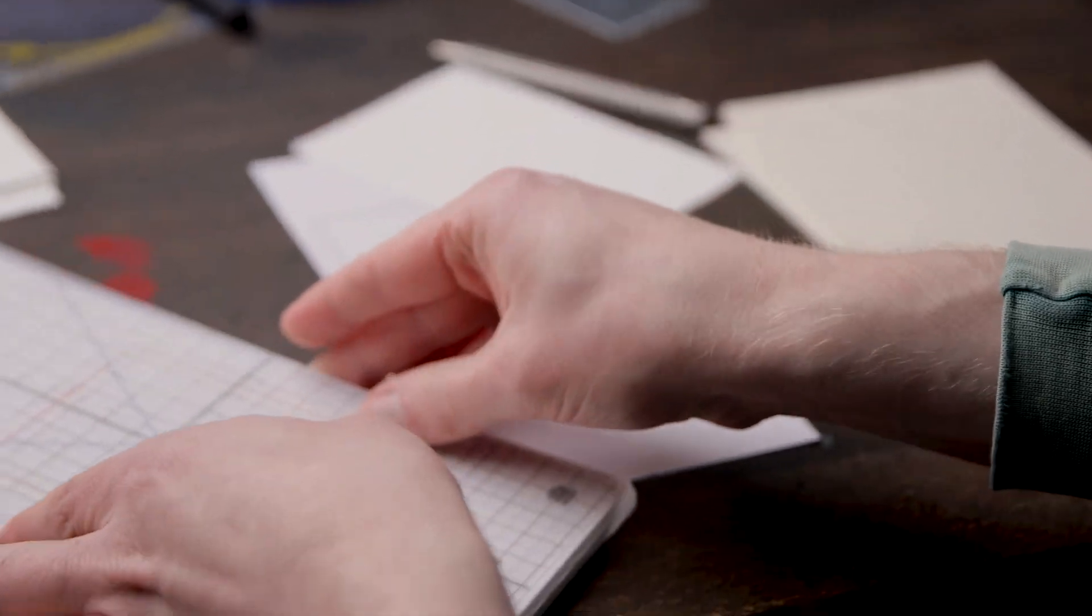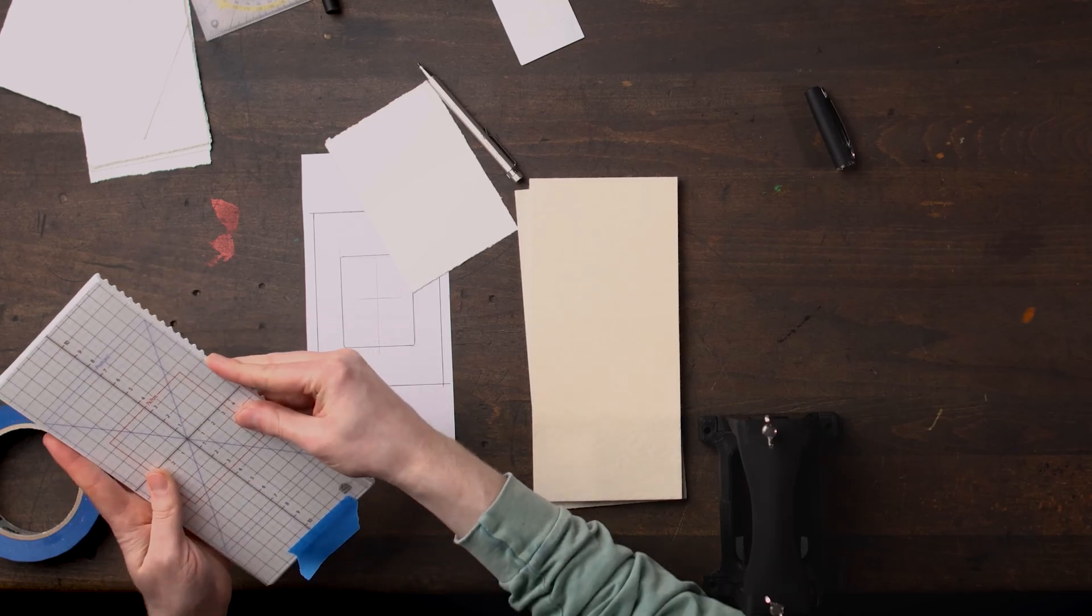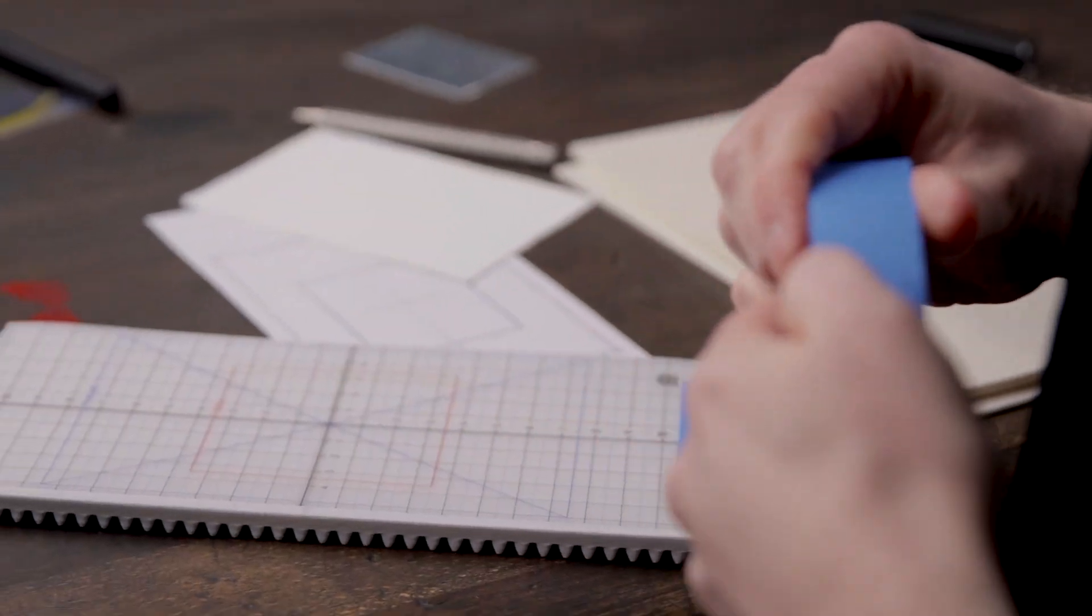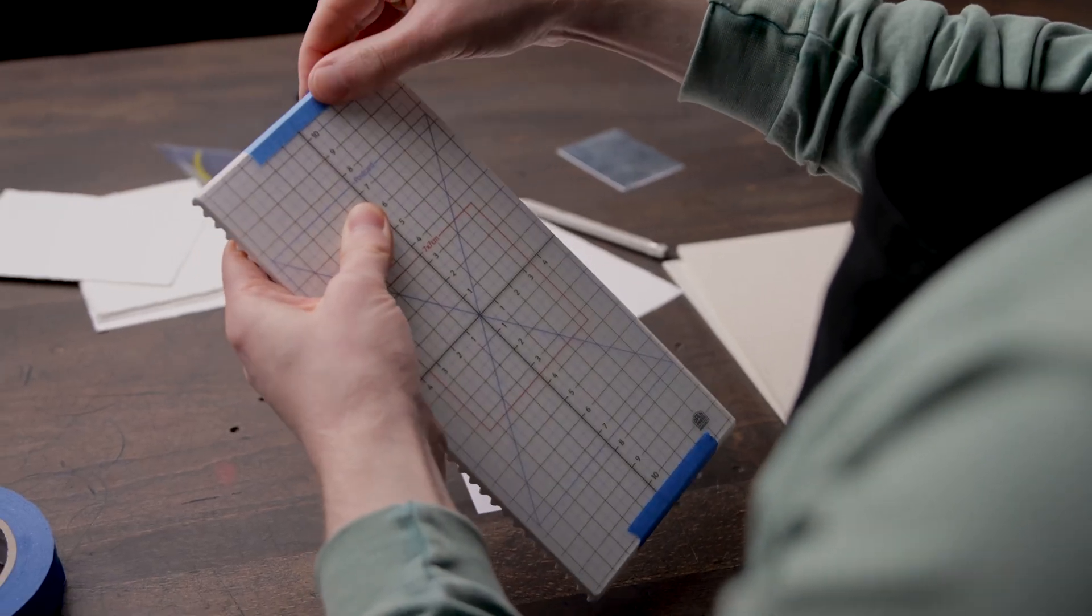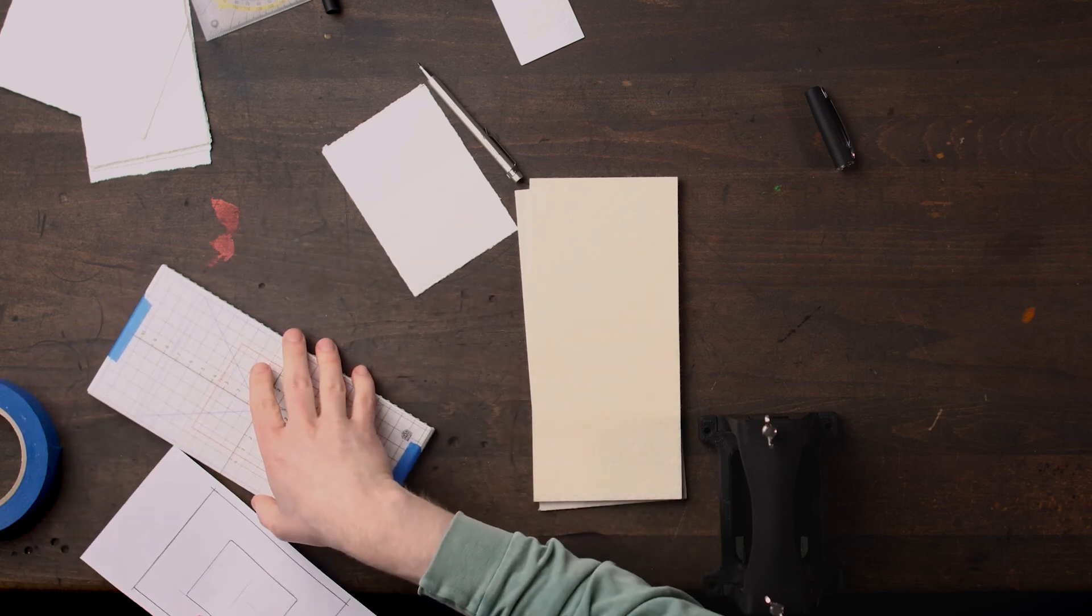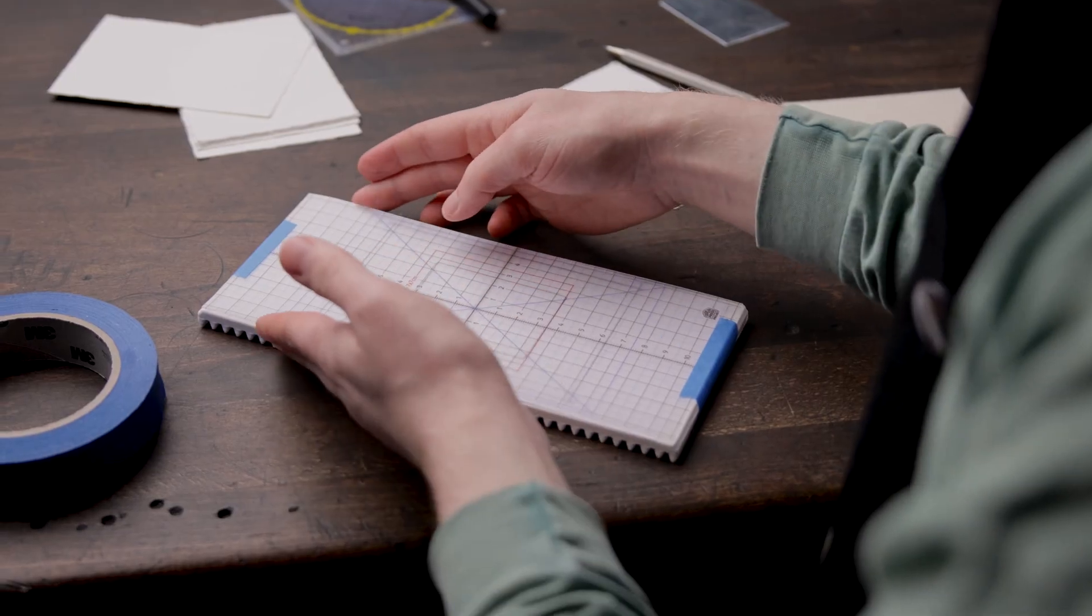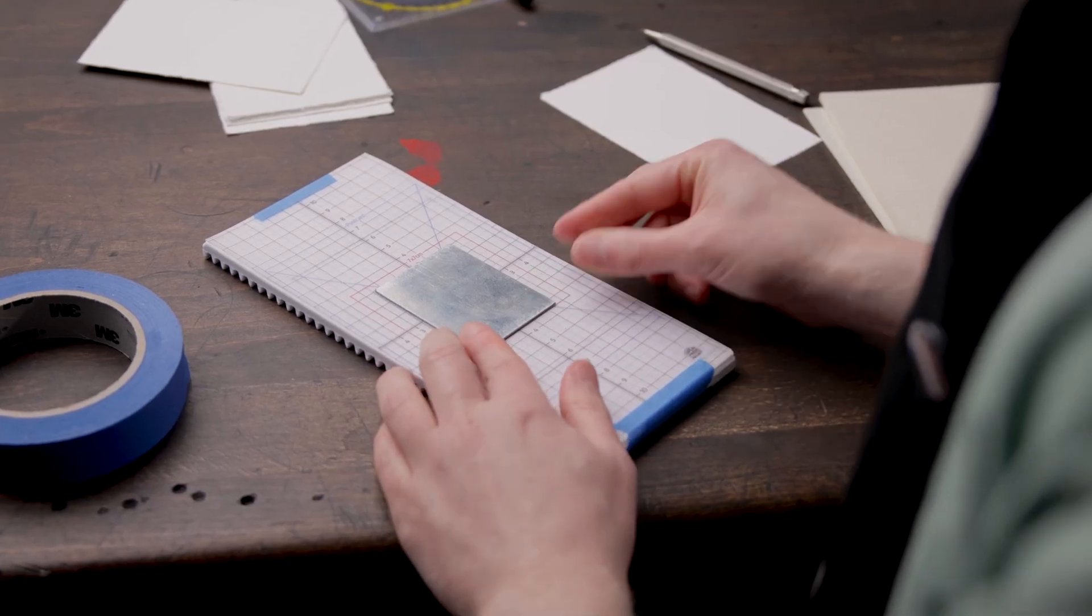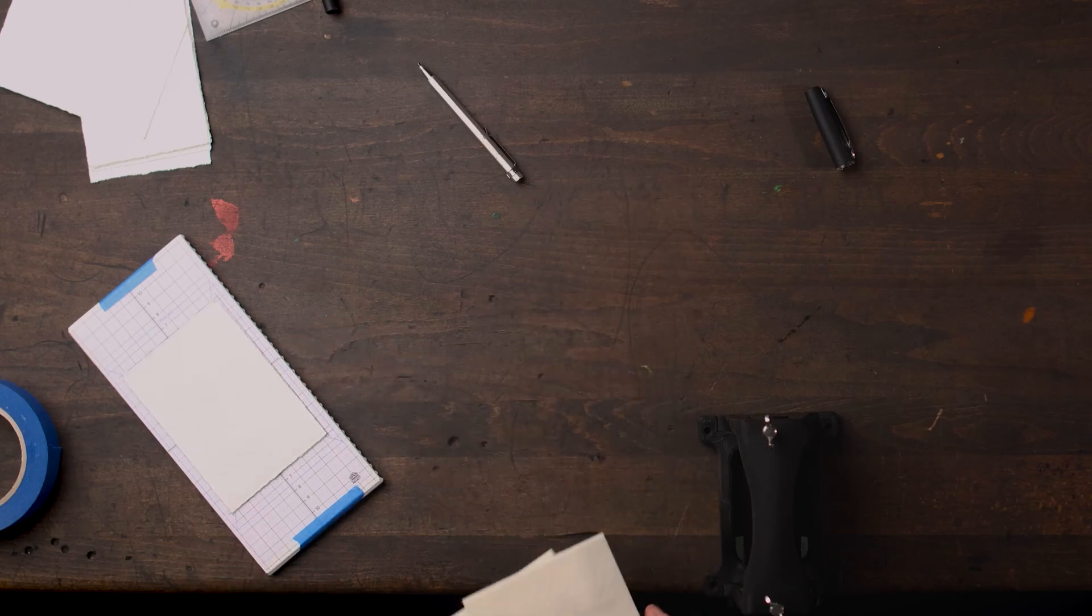And now it's time to tape the registration grid on my press bed. Now this is really important, make sure that the numbers and the logos are not flipped. That means that you're printing on the correct side of the registration grid. And I'm just using two pieces of tape to tape it to each end of the press bed. And once I've done that, I can slide in the little piece of paper that I just marked underneath it and have my registration all ready to go.